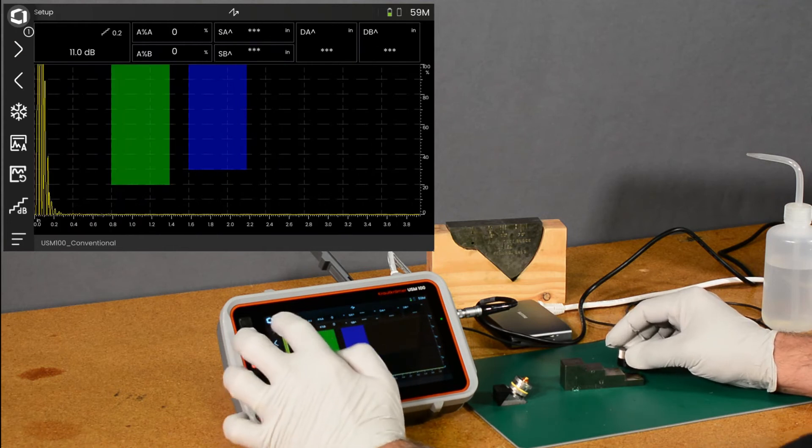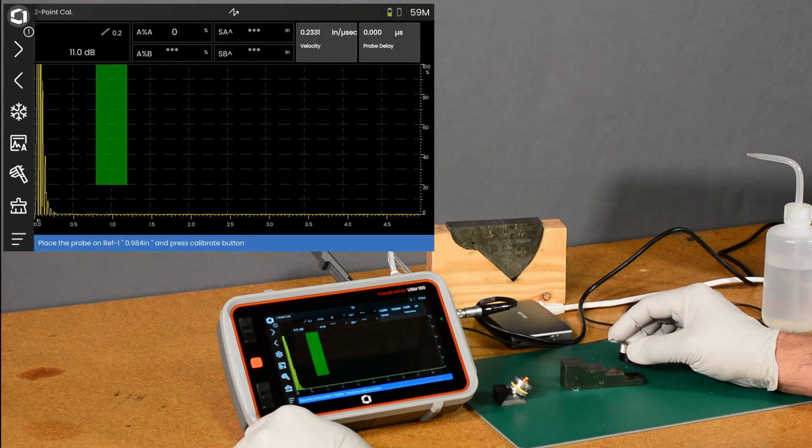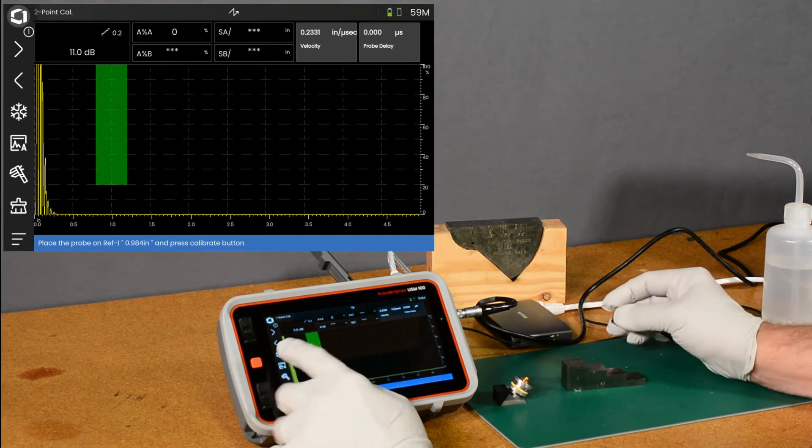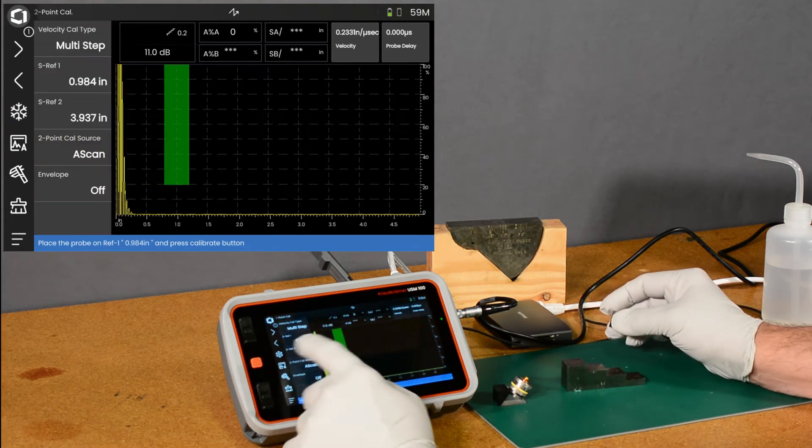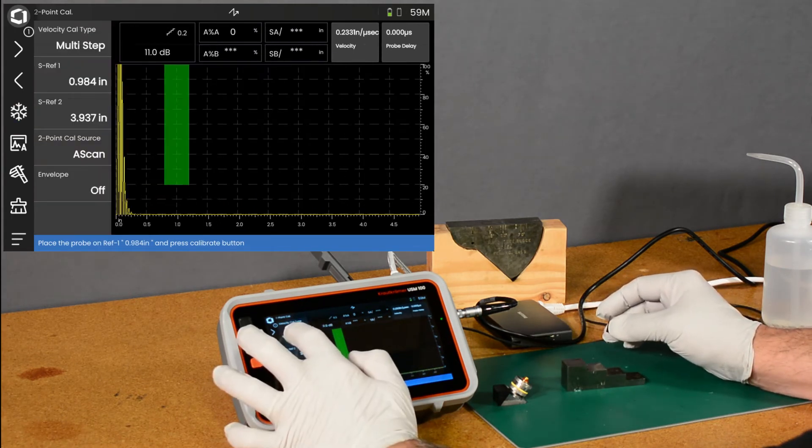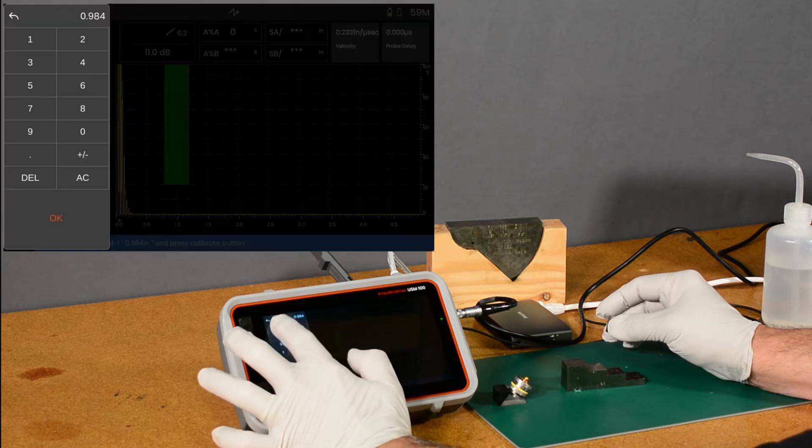and we'll go to our two-point calibration menu. And I'll swipe out my sidebar. I'm going to calibrate on the 1 inch thickness, so we'll change that to an inch.